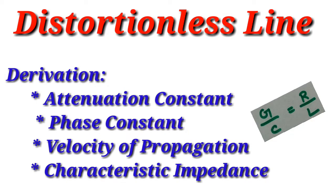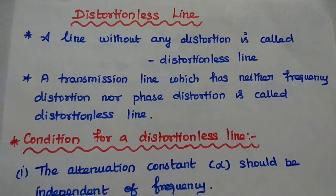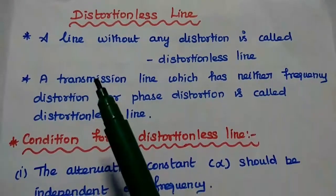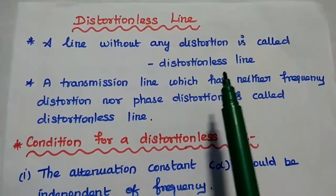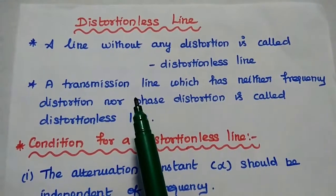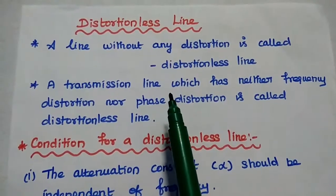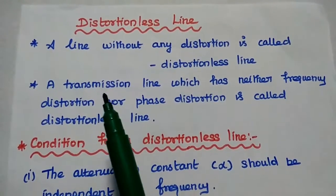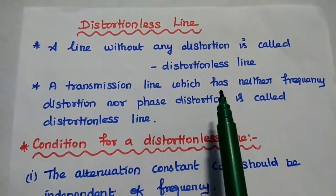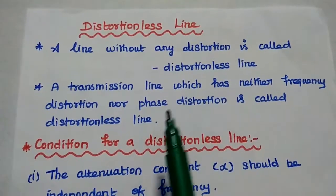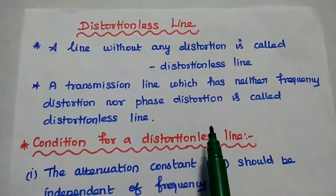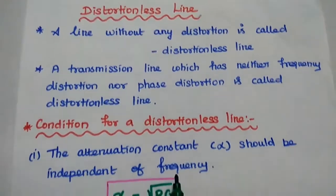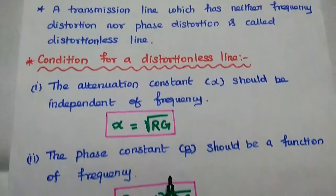Dear students, now we are going to discuss distortionless line and its conditions in detail. In general, a line without any distortion is called a distortionless line. In transmission line, there is a possibility of waveform distortion. If a transmission line has neither frequency distortion nor phase distortion, then it is called a distortionless line. There are certain conditions for the distortionless line.